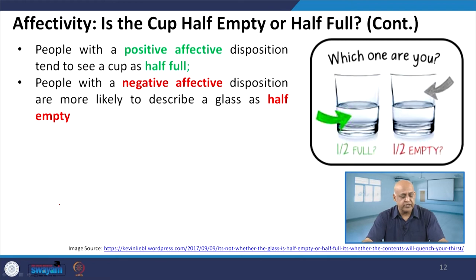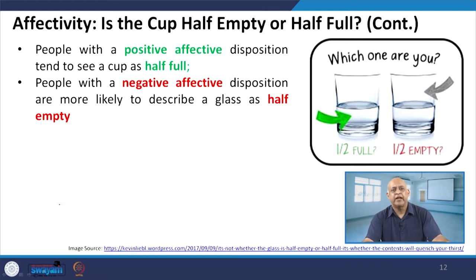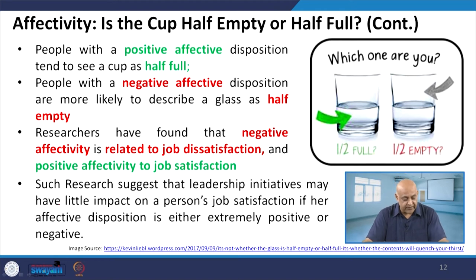People with a positive affective disposition tend to see a cup as half full; people with a negative affective disposition are more likely to describe a glass as half empty. The glass which is half full is also half filled with air — so it is not an empty glass, it is a filled glass, because there is water and there is air. This is a question of your approach — how you look at a given situation. If your affectivity is positive, then definitely you will be happy. Our role and responsibility is to convert negative affectivity to positive affectivity, and that is the leader's role.